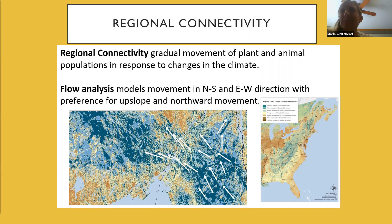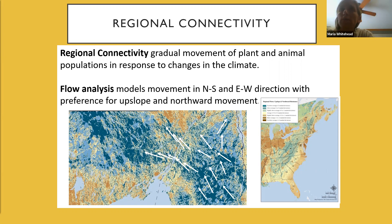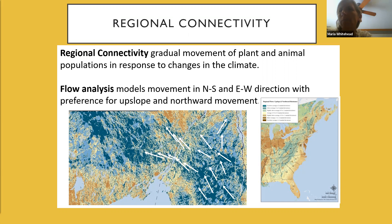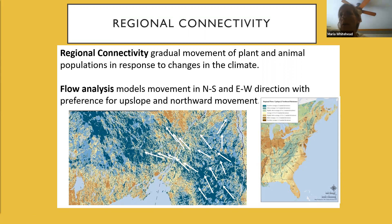We are going to shift to regional connectivity and some of the concepts around that, and some of the modeling that the Nature Conservancy has done to create a spatially explicit model that helps us understand areas that might be important for larger-scale movement of organisms in light of climate change. This regional flow analysis provides a generalized model of movement in the north, south, and east-west directions.